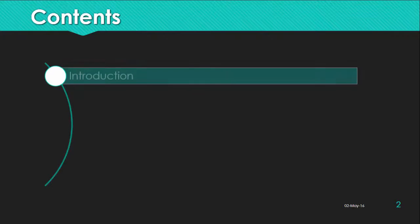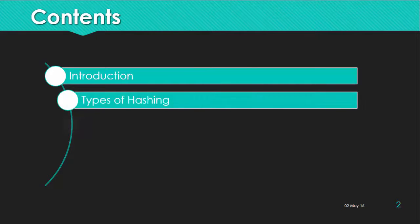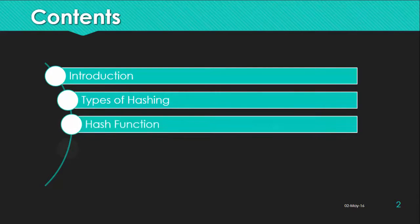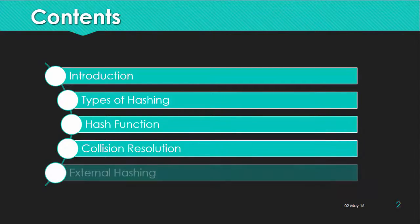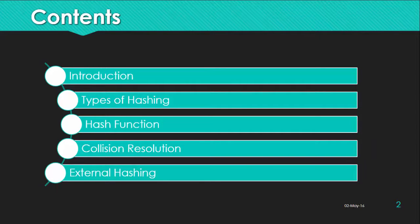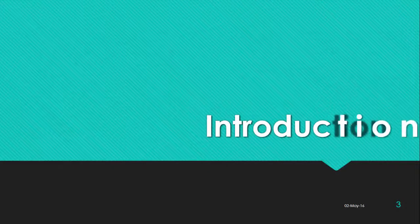The contents we are going to cover will give you an introduction about hashing as a concept, then we are going to talk about types of hashing — internal and external — after that we'll talk about hash functions and collision resolution, and after finishing all of this we are going to talk about external hashing. So let's start with the introduction about hashing.